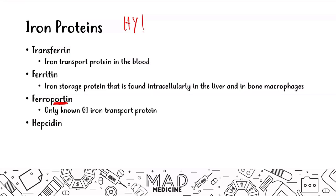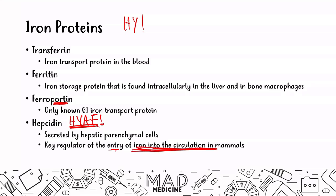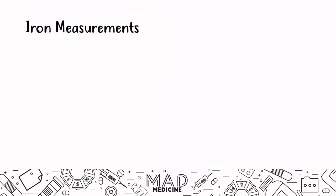Hepcidin is one of the highest yield concepts people forget. Hepcidin is secreted by hepatic parenchymal cells — from the liver — and is a key regulatory factor of iron entry into circulation. It blocks and degrades ferroportin, preventing iron from being transported. As an antibacterial mechanism, it prevents bacteria from accessing our iron stores and makes the environment harsher for pathogens.